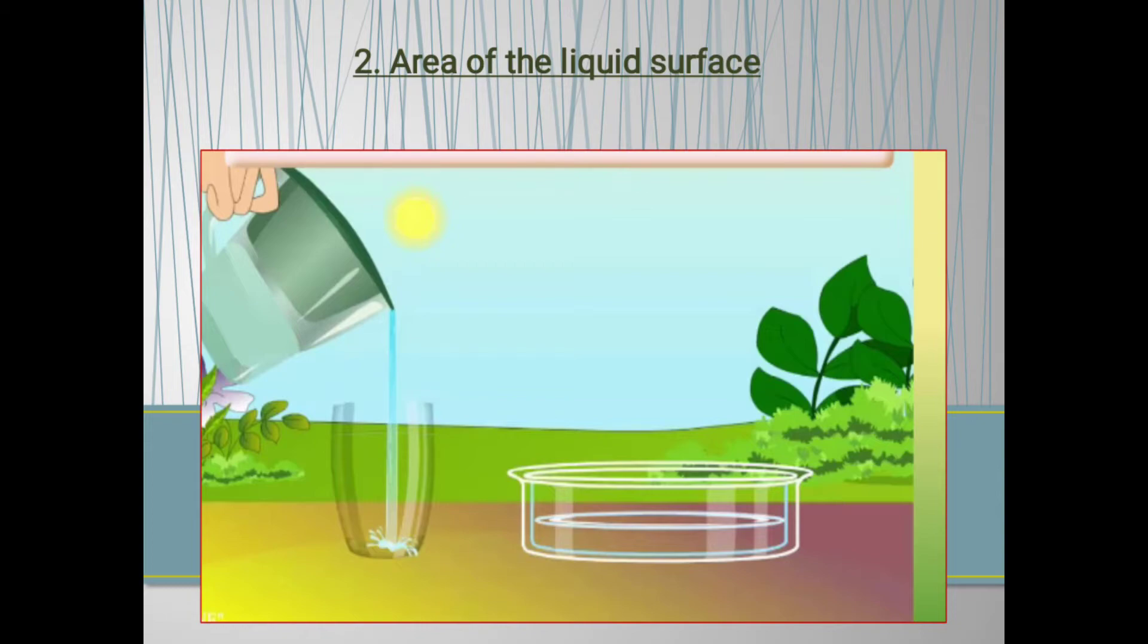The water will quickly evaporate when the surface area is large. Evaporation will be fast. The rate of evaporation will be fast when the surface area is large. I explained this to you with this example.